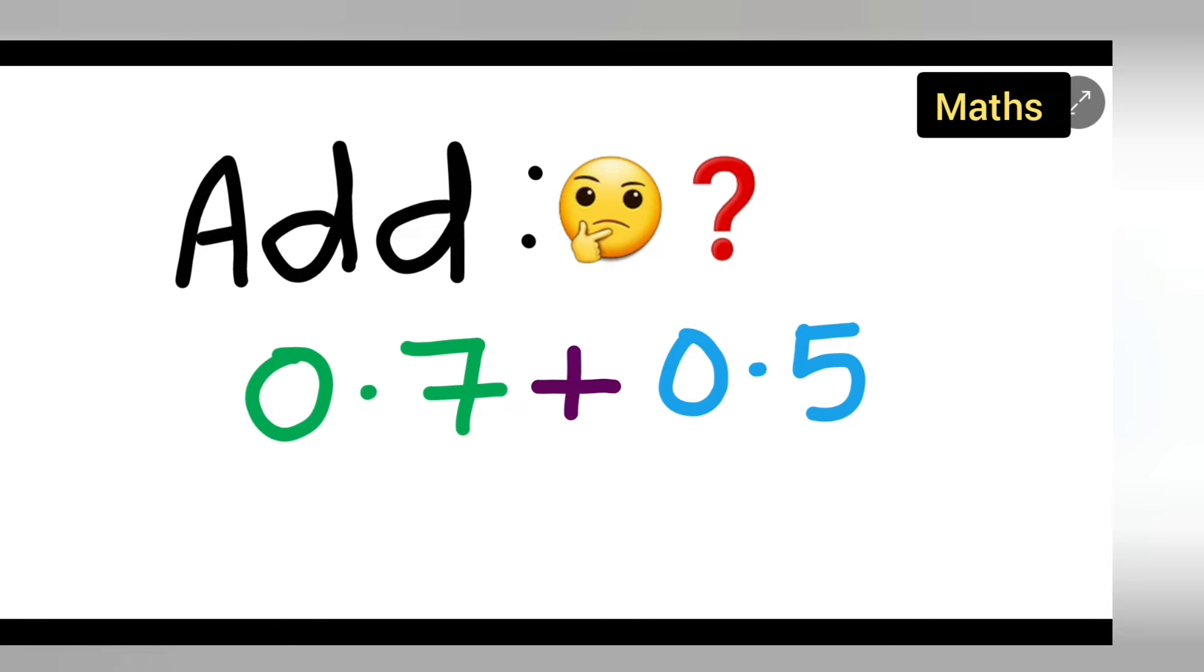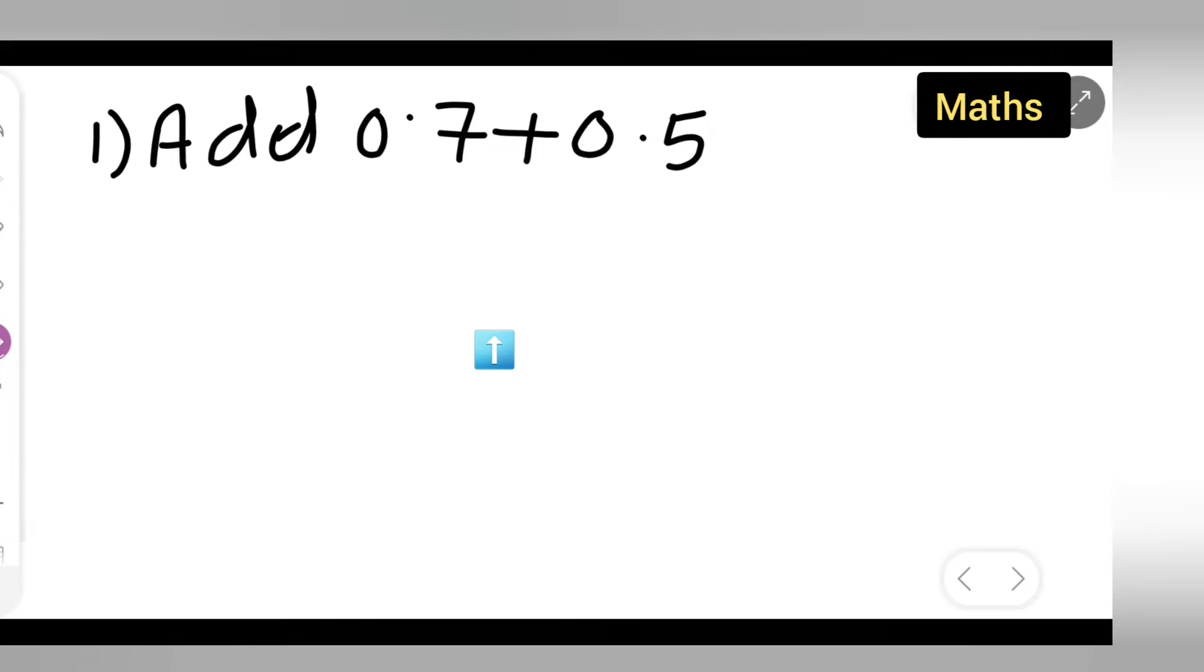Welcome to today's class of mathematics. Today's question is how to add 0.7 plus 0.5. The numbers are given in decimal point, so let us see how to add these numbers with the decimal point.